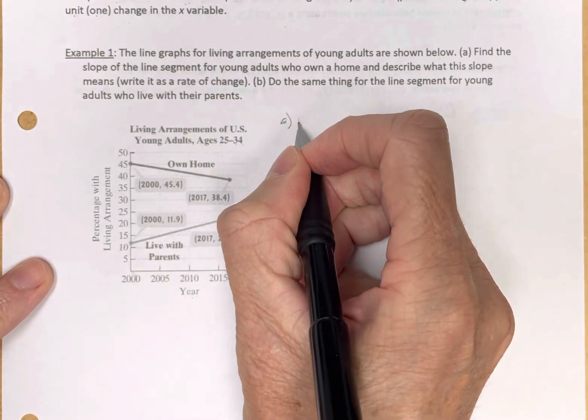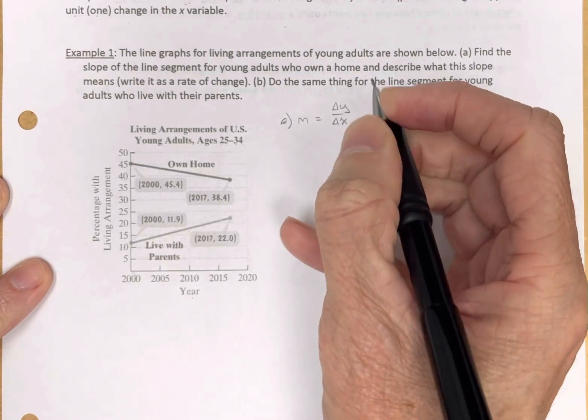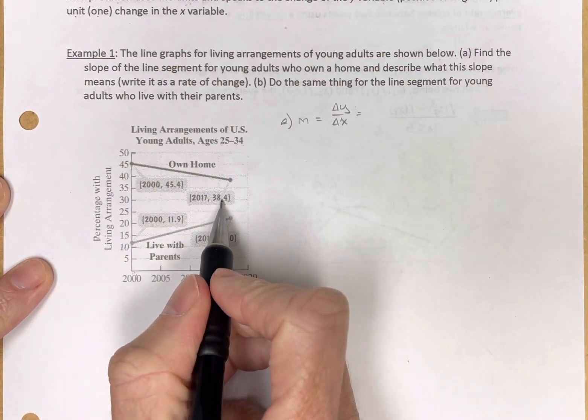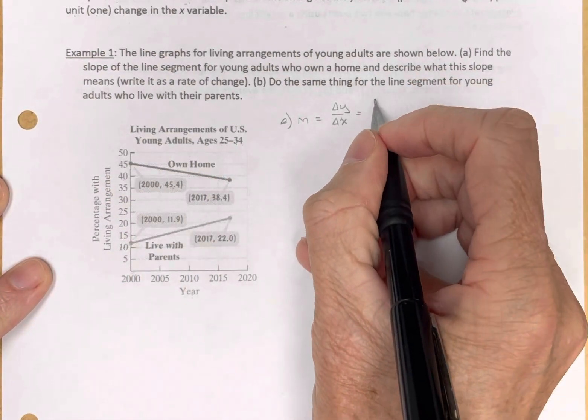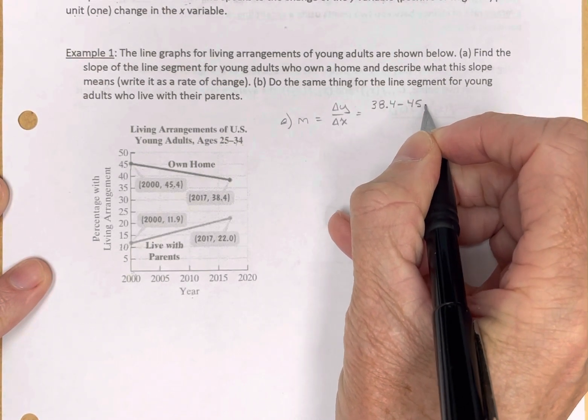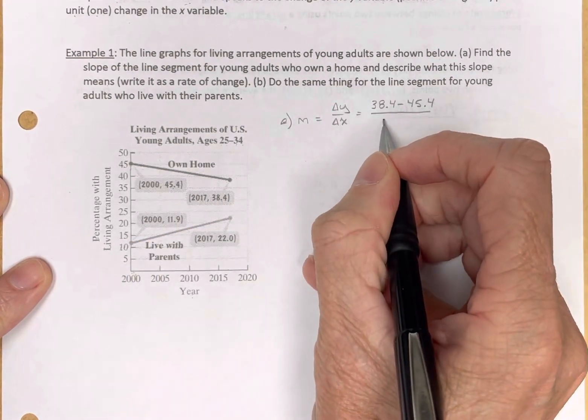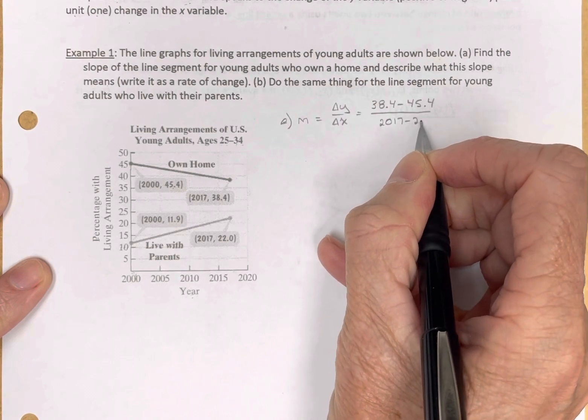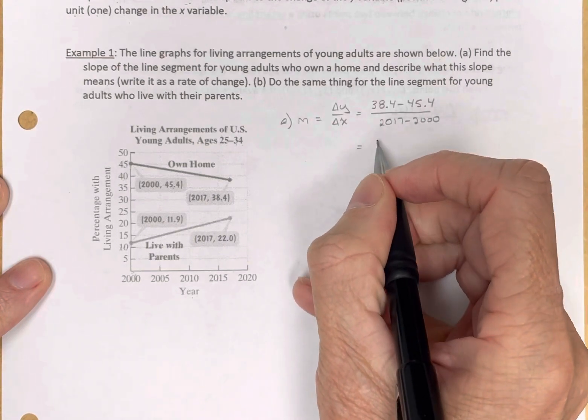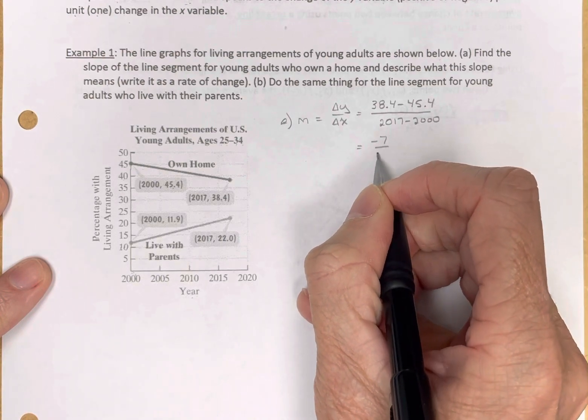Find the slope. M is equal to the change in y over the change in x, which is equal to - now we're focusing on the own a home, so the change in y is 38.4 minus 45.4. That's my change in y. Change in x is 2017 to 2000. So, 2017 minus 2000. I do that math and I get a negative slope.